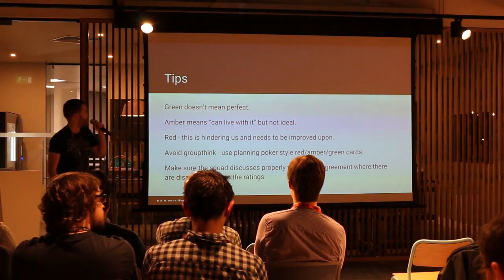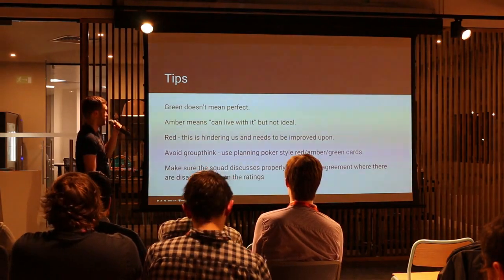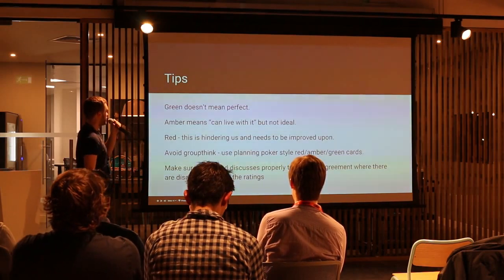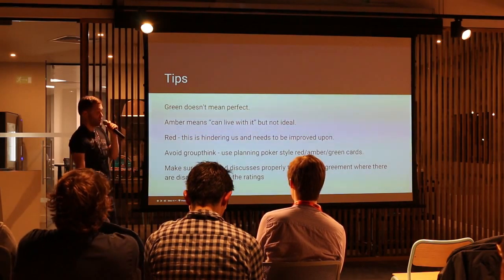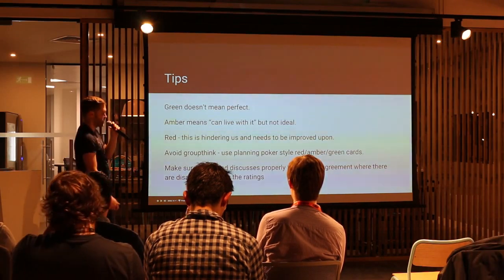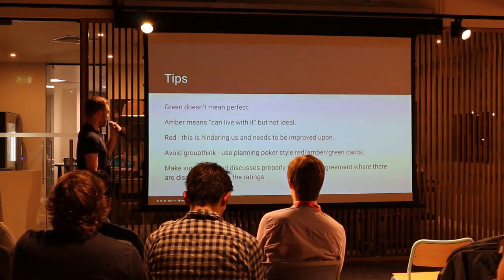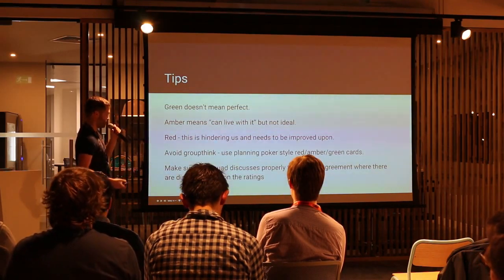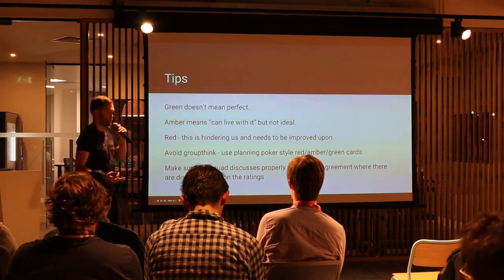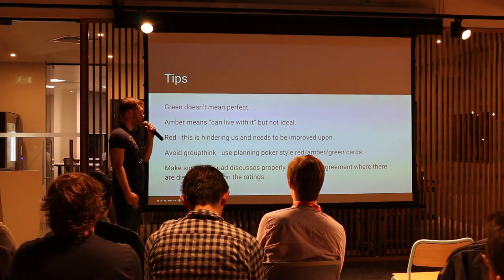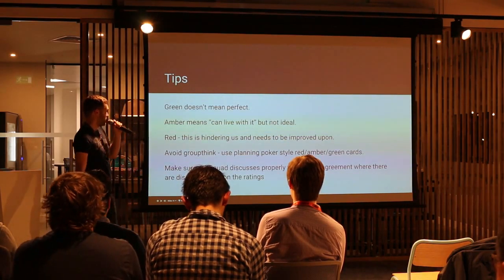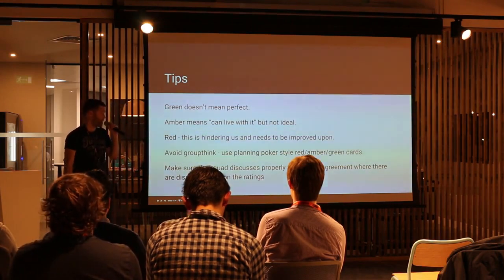A few tips: green doesn't always mean it's perfect — otherwise we wouldn't be able to do continuous improvement. Amber means we can live with it but it's not ideal. And red is something the squad definitely needs to be focusing on resolving. Use a planning poker-style voting approach to avoid groupthink and to avoid the strongest or most vocal members of the squad directing the discussion. Make sure the squad discusses properly and reaches an agreement where there are any disagreements in ratings.